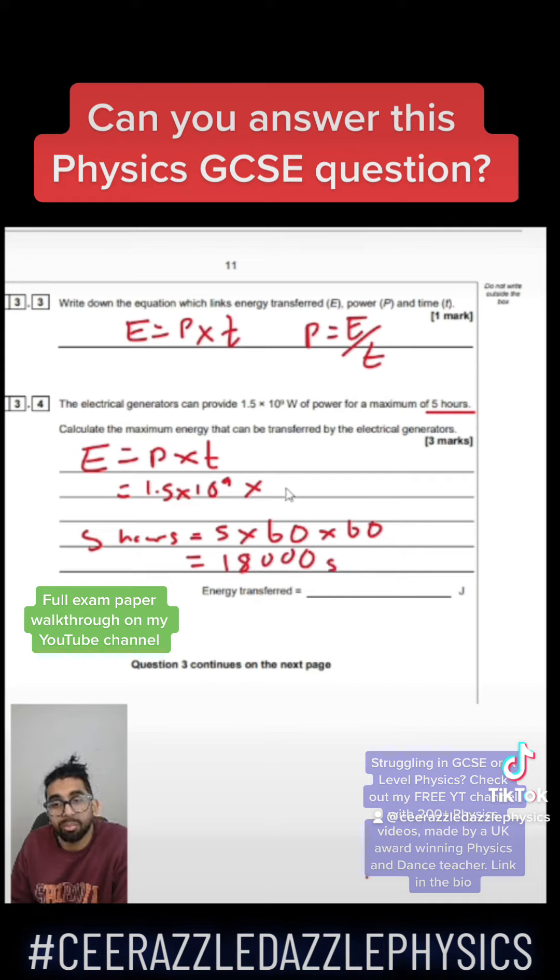Now, plugging this into our formula at the top, 18,000 seconds. Therefore, our energy is going to be 1.5 times by 10 to the power of 9 times by 18,000. I'm getting the energy of 2.7 times by 10 to the power of 13, everyone.